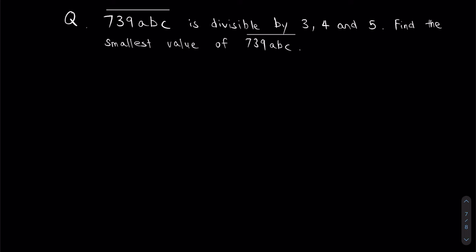So let's take a look at the question first. It says there's a 6-digit number, 739ABC. That number is divisible by 3, 4 and 5. We want to find the smallest possible 6-digit number that fulfills this criteria. Just in case you're confused by what the line on top means, it just means that 739ABC is a 6-digit number.